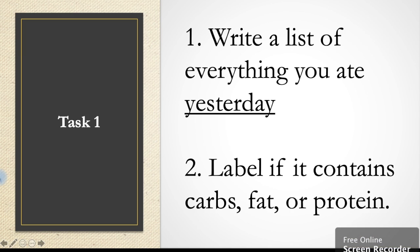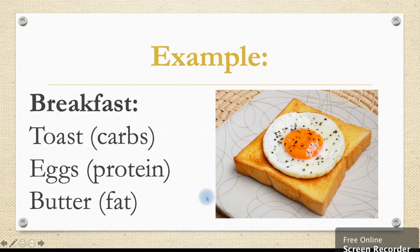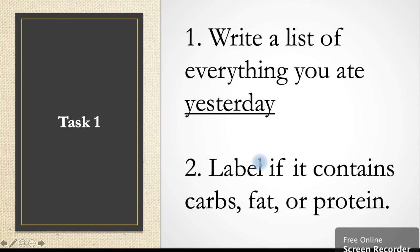My first task. Pause this video. Write a list of everything that you ate yesterday — breakfast, morning tea, lunch, afternoon tea, dinner and supper. Number two: label if it contains carbohydrates, fat or protein. Use the tips that we just went through to help you. An example would be for breakfast: toast contains carbs, eggs contain protein and butter contains fat. Off you go. Good luck.